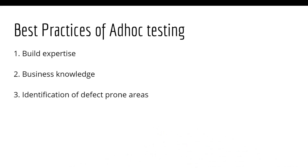Some of the best practices of ad-hoc testing. First, build expertise. It is always advisable to get the whole process rechecked by someone with experience, as a person of experience will be more intuitive regarding bugs in their software and where to find them. Second is business knowledge. Good business knowledge and a clear understanding of the requirements make the whole execution of the testing process easy and successful. The last one is the identification of defect-prone areas. Some features or parts of software tend to be used more than others, and mostly these areas are where most defects tend to be found. Therefore, a fair knowledge of defect-prone areas should be present to detect and rectify the bugs.